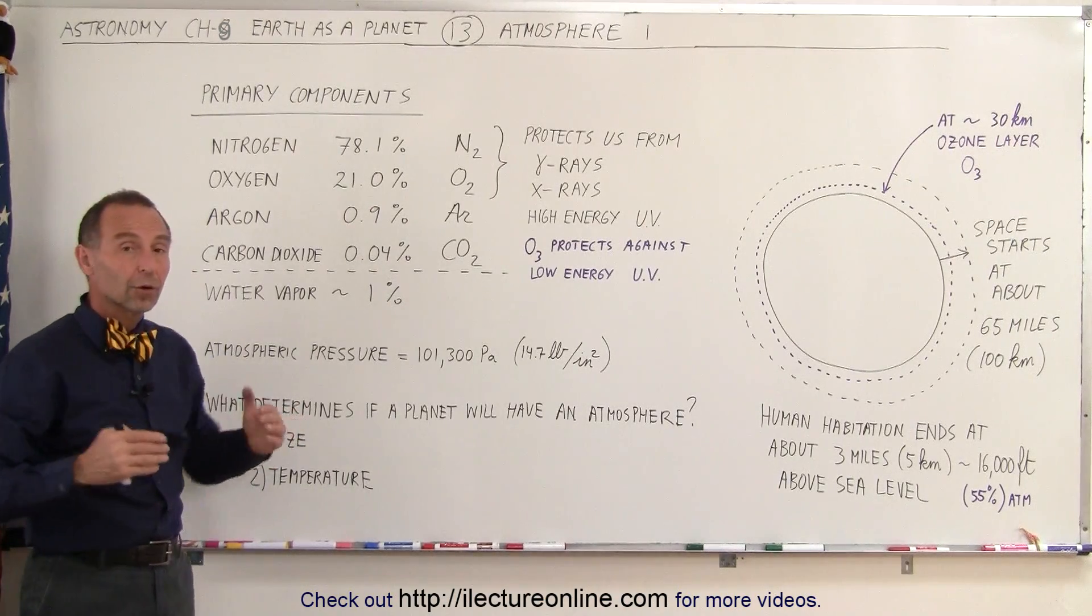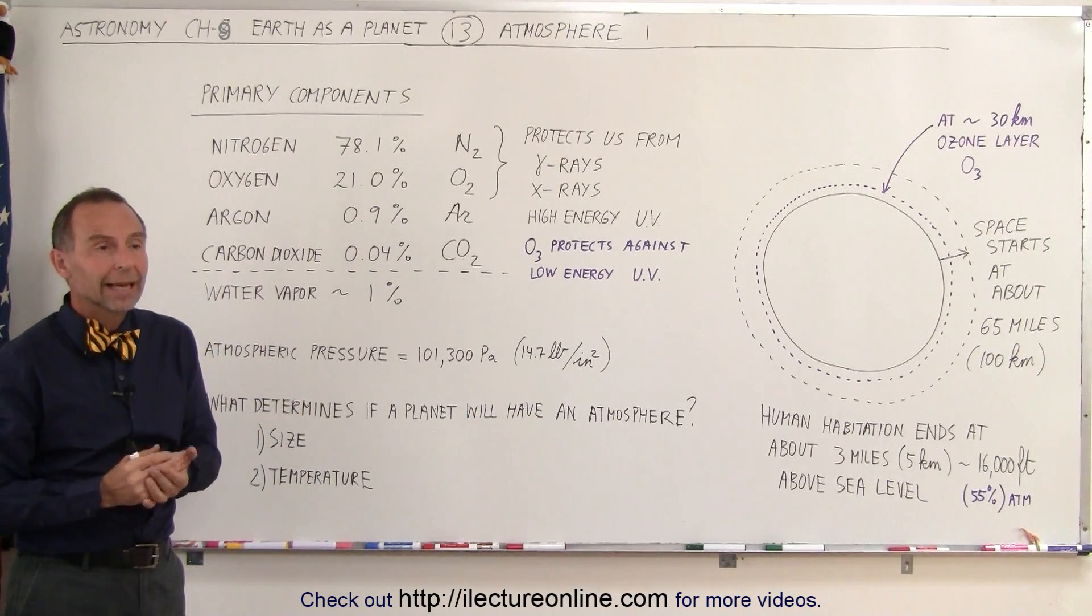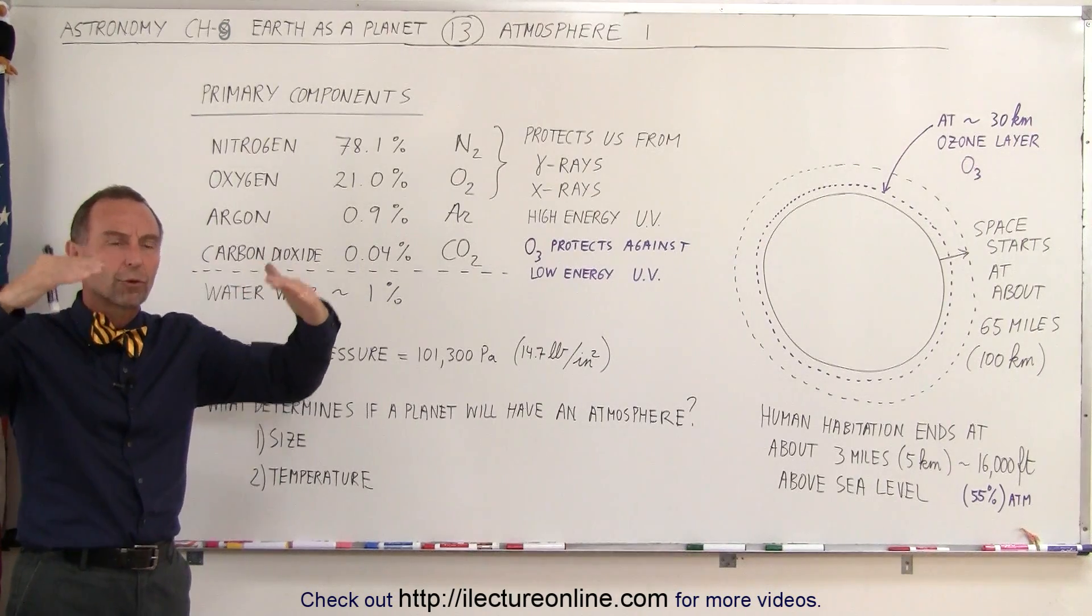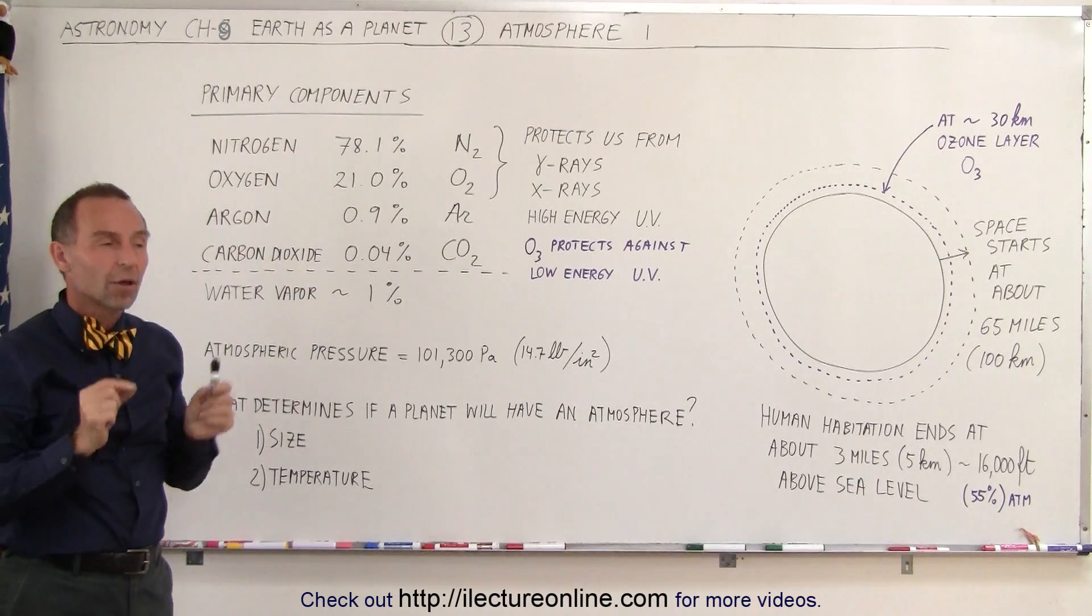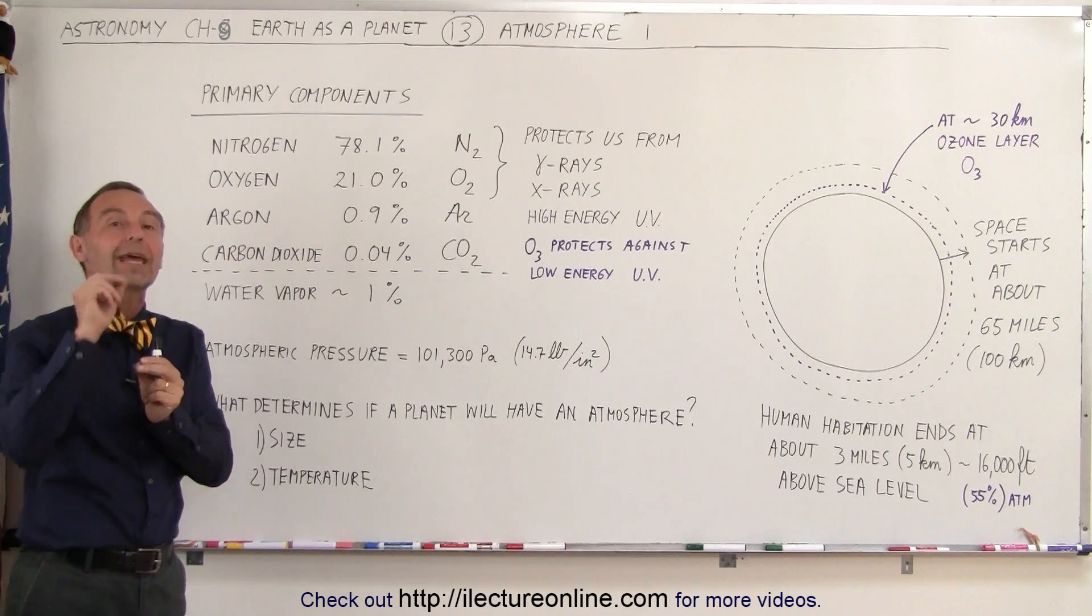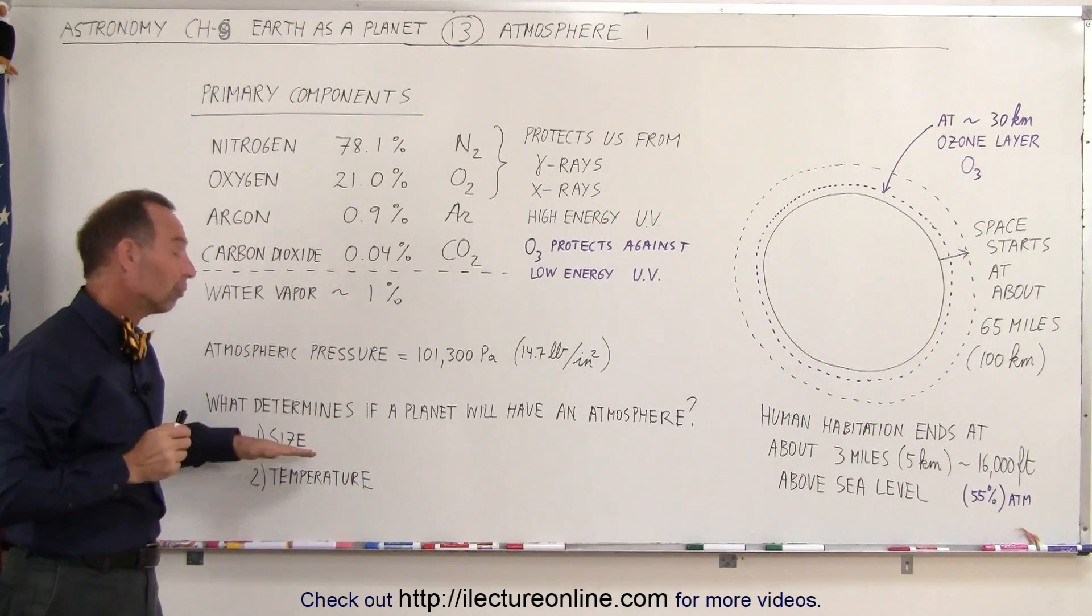First is size. Earth is a fairly big planet relative to all the terrestrial planets. It's the biggest of them all, and it therefore has a large gravitational pull, a large gravitational force pulling back, keeping the atmosphere from escaping to space. All the molecules in the atmosphere move at a fairly rapid pace, but if they can't reach the escape velocity, they can't escape the gravitational attraction of the Earth.